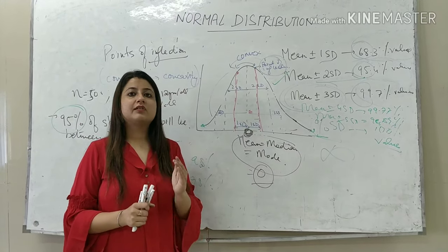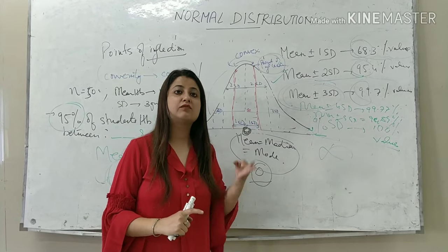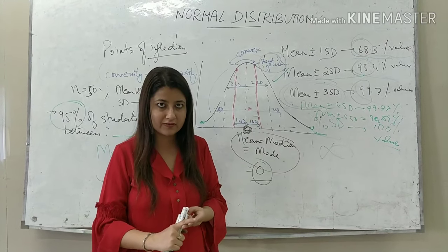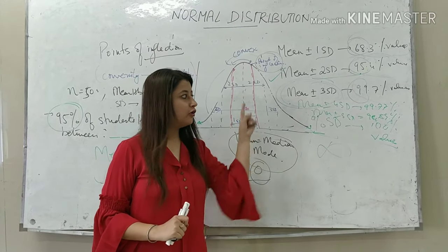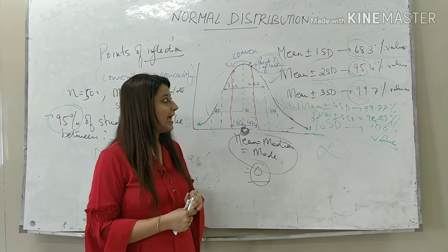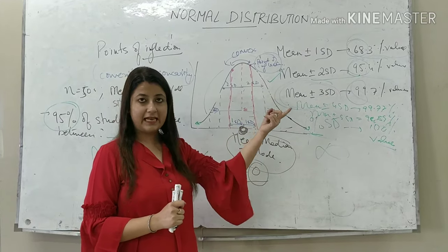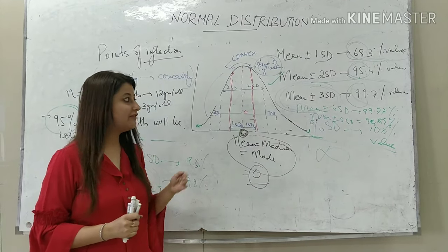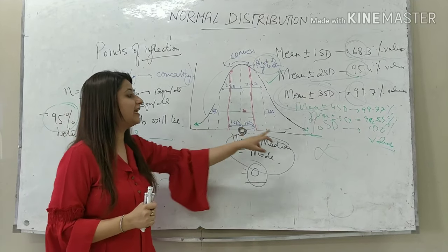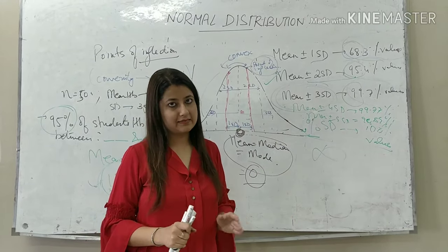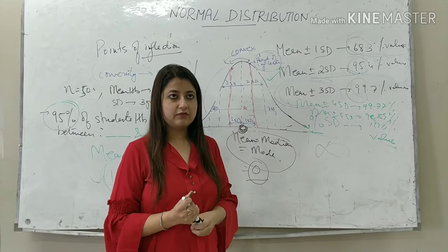To revise: for a Normal Distribution, the curve is bell-shaped and bilaterally symmetrical. Mean equals median equals mode — all three coincide. The total area is 1 or 100%. If mean is 0, SD equals 1. Mean ± 1 SD covers 68%, mean ± 2 SD covers 95%, mean ± 3 SD covers 99% of values. And the tails of the curve never touch the base. I hope this is clear — put any comments in the comment section below.